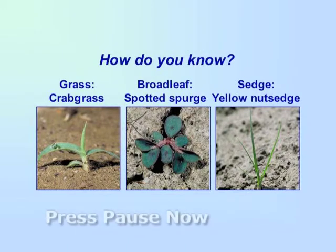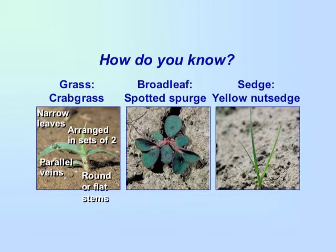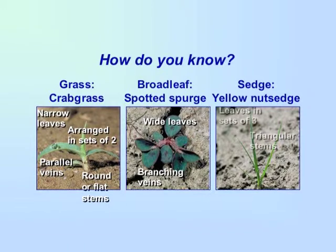How do you know? Grasses have narrow leaves with parallel veins, and leaves are arranged in sets of two; stems are round or flattened. Broadleaves have wide leaves with branching veins. Sedge leaves are arranged in sets of three and have triangular stems. Remember that sedges have edges. Knowing what type of weed you have is necessary to determine the best management strategy.